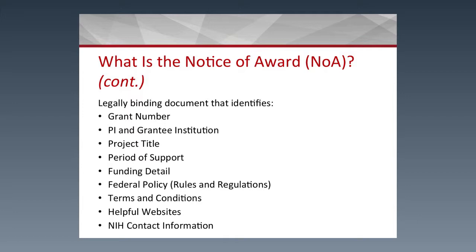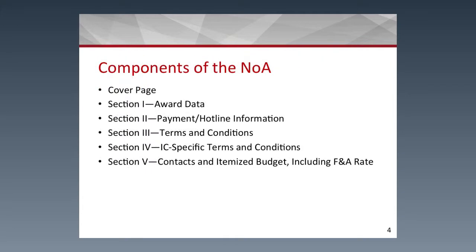It also includes the terms and conditions of the award, a few helpful websites, and NIH contact information. The Notice of Grant Award has several components: a cover page; Section 1, which is the award data; Section 2, payment and hotline information; Section 3, the general terms and conditions; Section 4, the IC or institute-specific terms and conditions; and Section 5, which includes NIH contact information, an itemized budget, and the F&A rate.